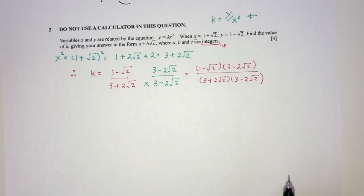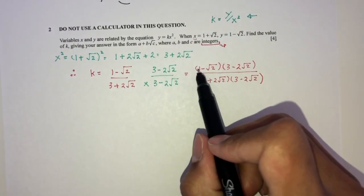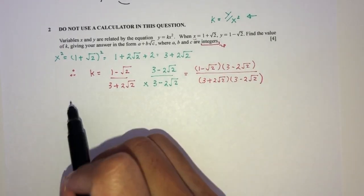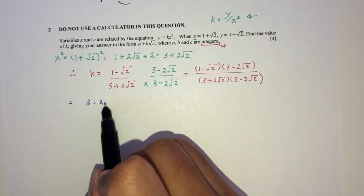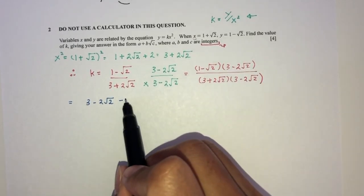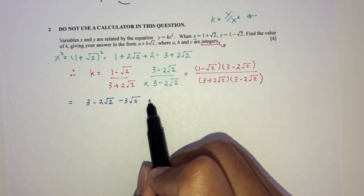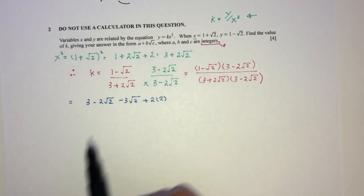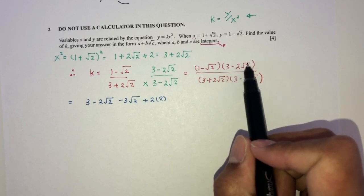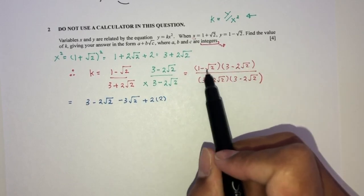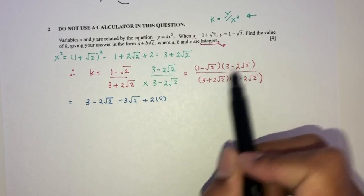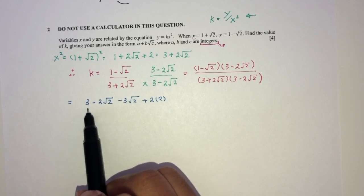Now we just have to simplify one by one. For the numerator, take 1 times the bracket — that gives 3 minus 2 root 2. Then minus root 2 times that: minus 3 root 2, and then plus 2 times 2 — because minus root 2 times minus 2 root 2, the minuses cancel, root 2 times root 2 is 2, so 2 times 2 is 4. That will be the numerator.